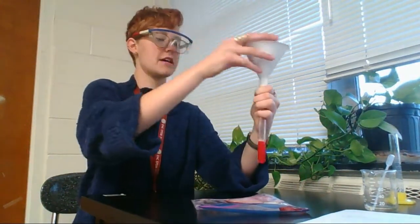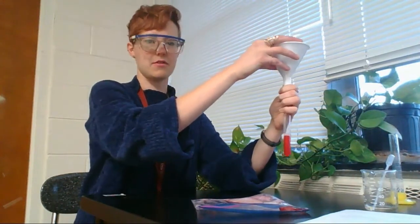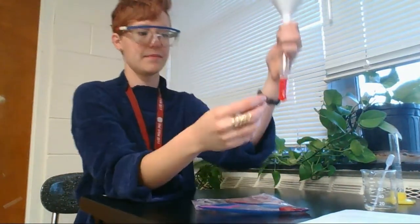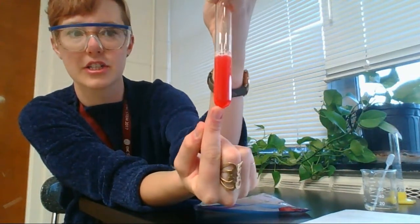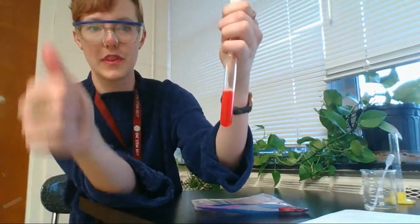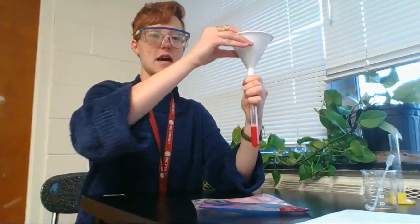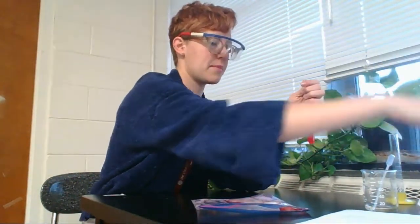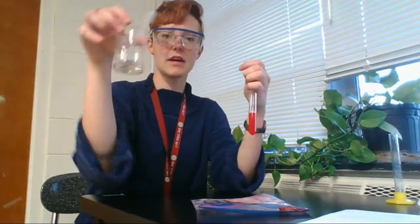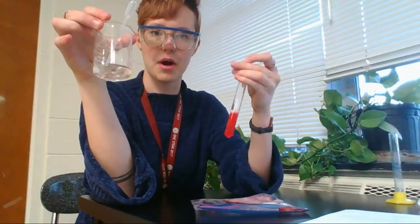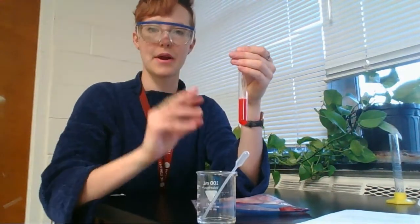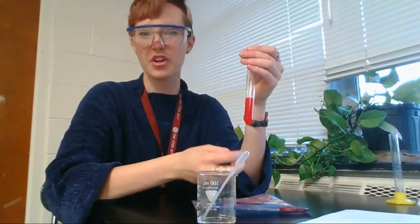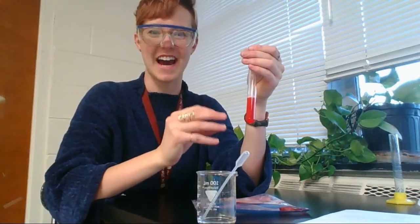For our very last step, I'm going to take my funnel, set it to the side. Notice how there's not really chunks in here, it's just liquid. That is a good thing. I'm going to put it to the side on top of my paper towel because it's going to get messy. And last but not least, I'm going to take my isopropyl alcohol. Isopropyl alcohol will separate our DNA from all the other molecules and all the other guts inside of our test tube. So I'm going to take my little pipette here and I'm going to add several, several drops.